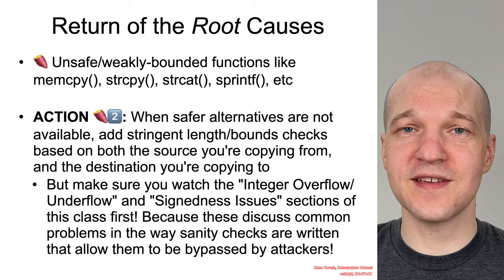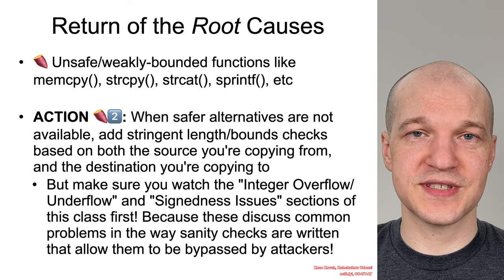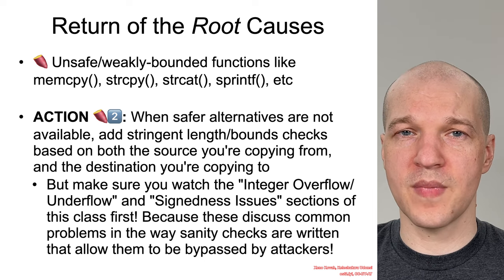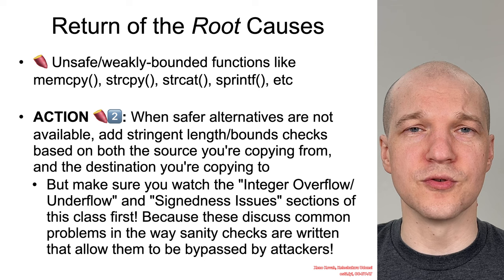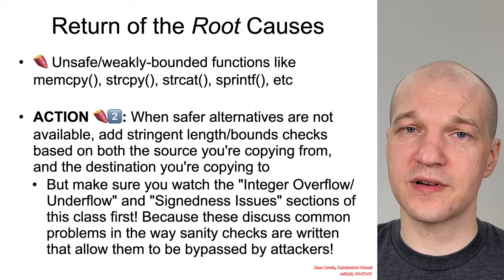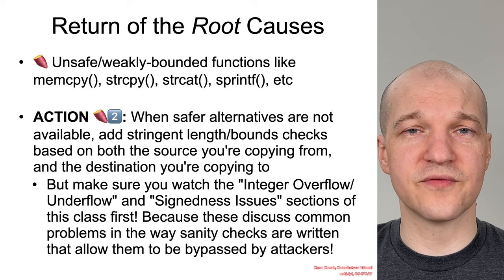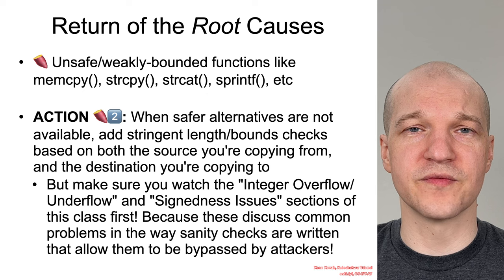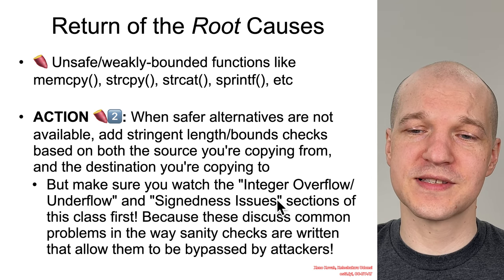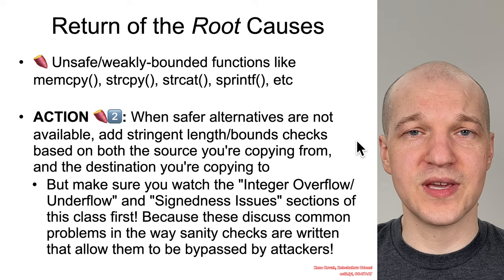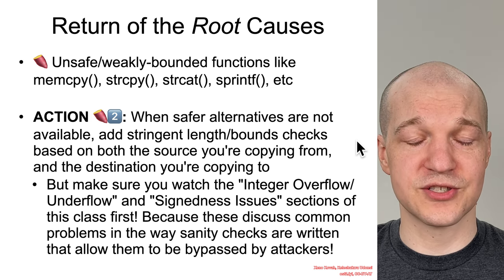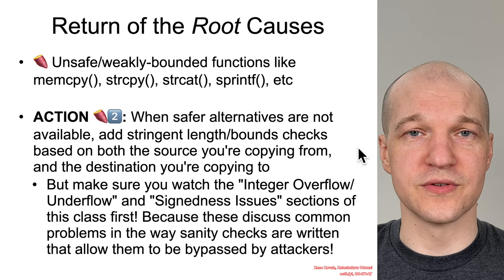Sweet potato two guidance is: if no better alternatives are available, you need to add stringent sanity checks to the inputs. In particular, you want to be bounds-checking both the data you are copying from and the destination where you're copying to. You want to make sure you're not overwriting — which causes buffer overflow errors — but also not over-reading, which causes a different type of vulnerability like an information disclosure or info leak that we'll learn about in future classes. Furthermore, before you start adding sanity checks willy-nilly, make sure you first go through the sections on integer overflows, underflows, and signedness issues, because a lot of sanity checks programmers typically add will be bypassable by attackers if not constructed correctly.